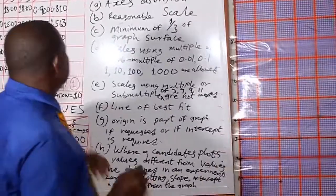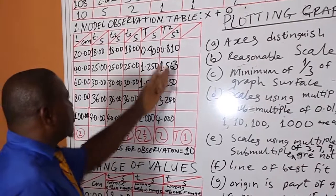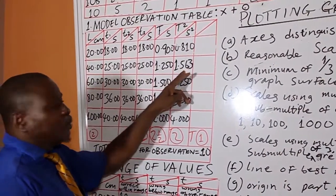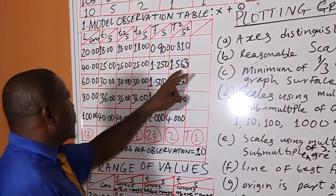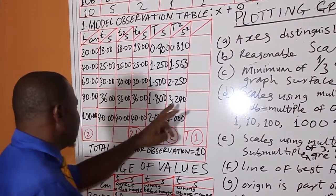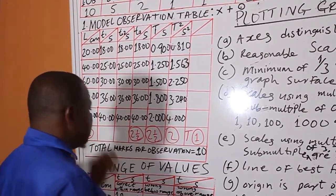Now, the next one. When you are plotting, you plot three decimal places to two decimal places. This one is 0.81 against 20. 1.56 against 40. 2.25 against 60. 3.24 against 80. 4.00 against 100.